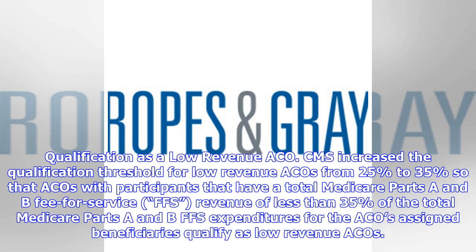Qualification as a low revenue ACO: CMS increased the qualification threshold for low revenue ACOs from 25 percent to 35 percent, so that ACOs with participants that have a total Medicare Parts A and B fee-for-service (FFS) revenue of less than 35 percent of the total Medicare Parts A and B FFS expenditures for the ACO's assigned beneficiaries qualify as low revenue ACOs.